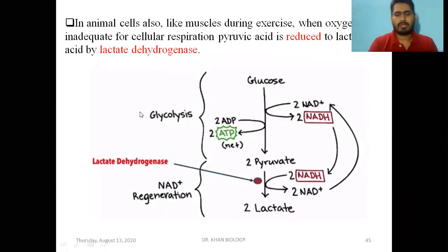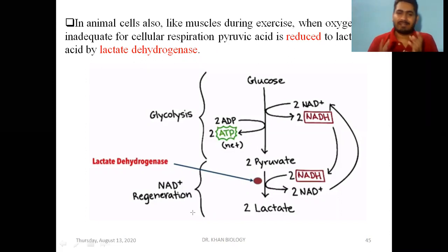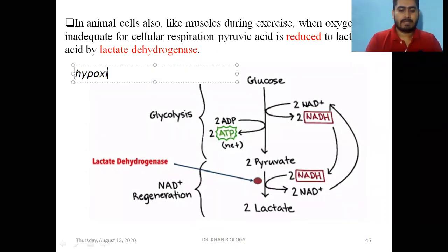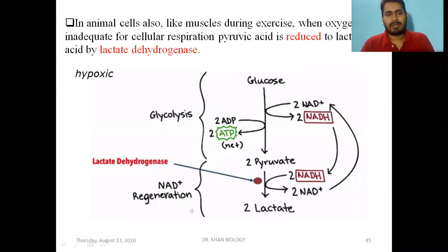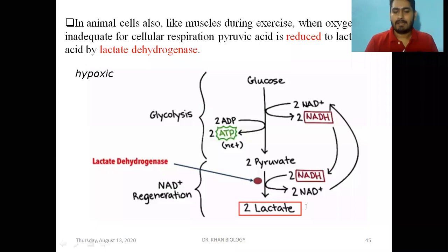The second type of fermentation is lactic acid fermentation. When we are running very fast, our muscles have high oxygen requirements. But even after harsh breathing, we do not get enough oxygen to meet demand. In this condition, we go into oxygen debt — the muscles become hypoxic. The product is a 3-carbon organic acid called lactic acid.